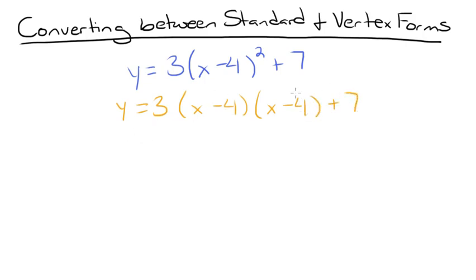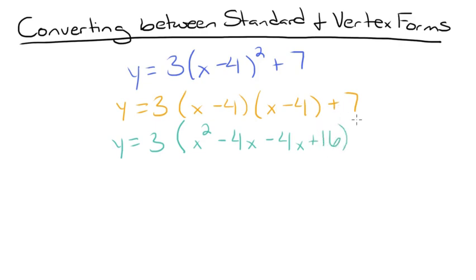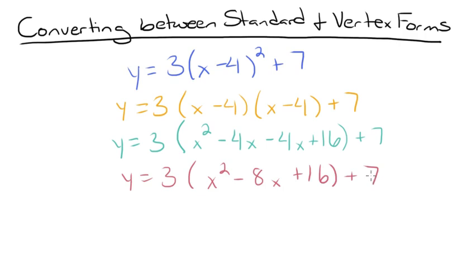Then we can FOIL to simplify: x times x is x squared, x times negative 4 is minus 4x, negative 4 times x is also minus 4x, and negative 4 times negative 4 is positive 16, plus 7. Combining like terms gives y equals 3 times x squared minus 8x plus 16 plus 7. Then we distribute the 3 to the trinomial and get y equals 3x squared minus 24x plus 48, and the plus 7 stays for now.